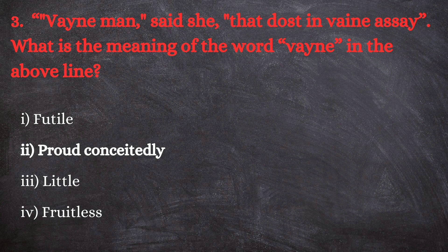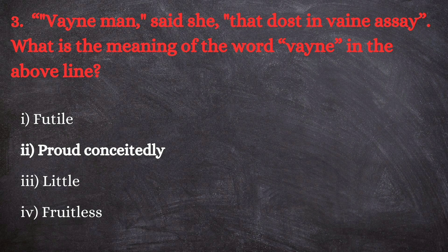Question number three: 'Vain man said she, that doest in vain assay' — what is the meaning of the word 'vain' in the above line? The options are: first, futile; second, proud/conceitedly; third, little; and fourth, fruitless. The correct answer is the second option — proud/conceitedly. Here we find a pun, where the two 'vains' have different meanings: the first 'vain' means proud, whereas the second 'vain' means futile.